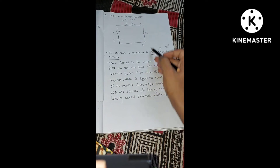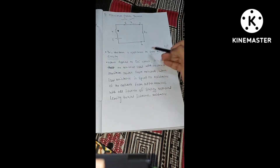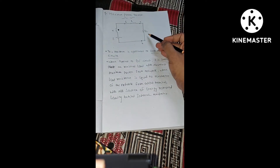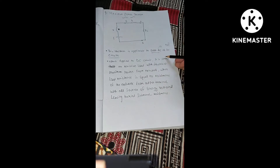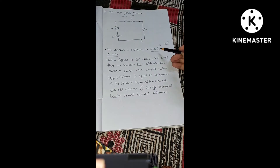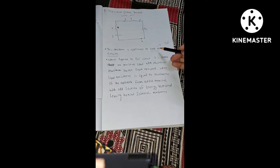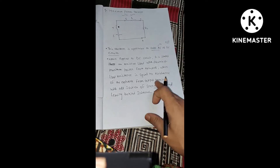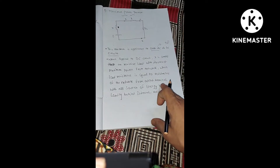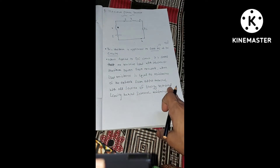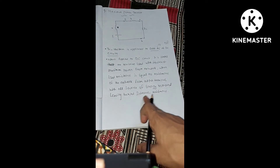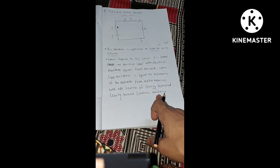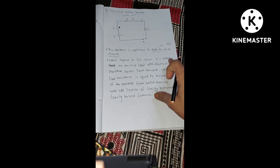When applied to a DC circuit, the maximum power theorem is stated as: a resistive load will abstract maximum power from the circuit when the load resistance is equal to the resistance of the network from the output terminal, with all the sources of energy removed leaving behind the internal resistance.